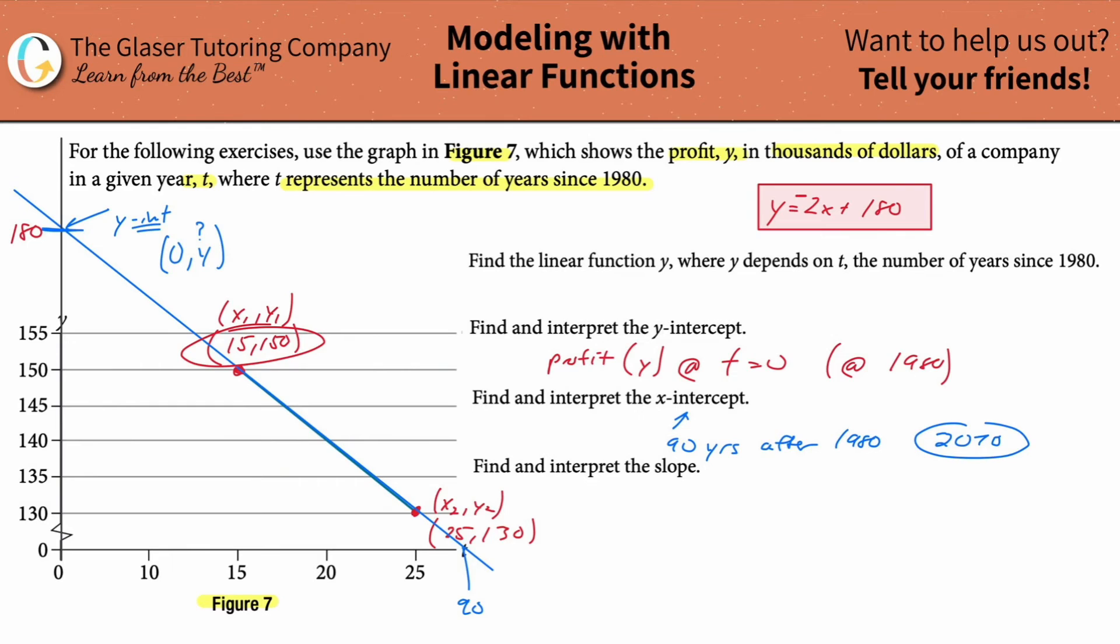I think stuff like business analysis, complex systems, very interesting stuff. I wish I studied that earlier in life. Anyway, find and interpret the slope. The slope we already calculated before, it was negative two. What does negative two mean? Remember that anytime we have a slope, it's always the change in Y over the change in X.